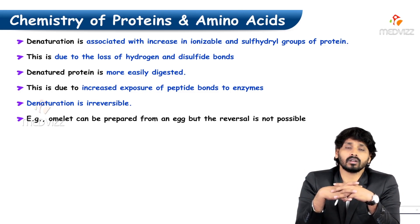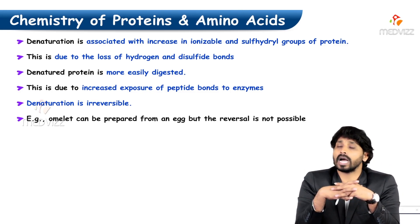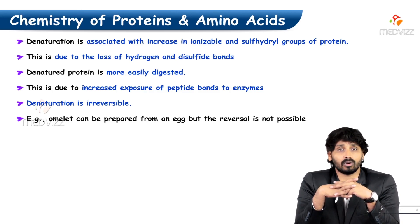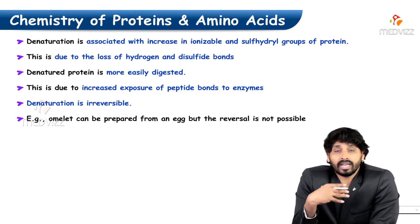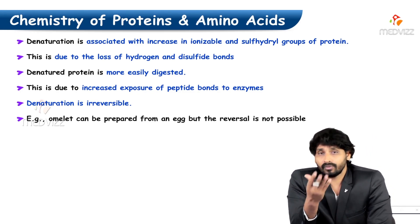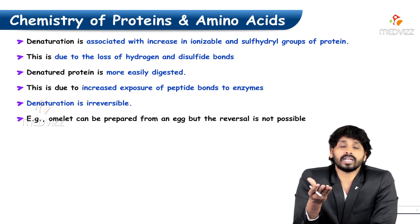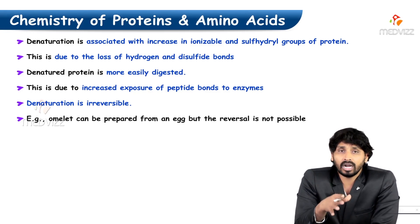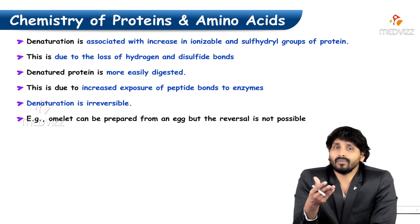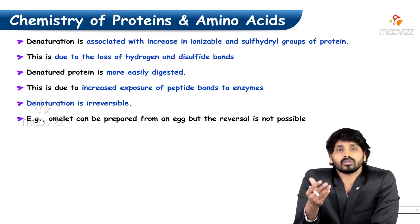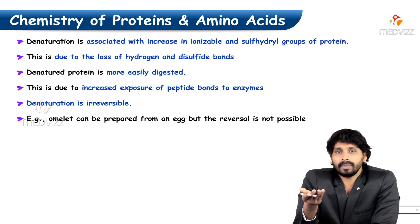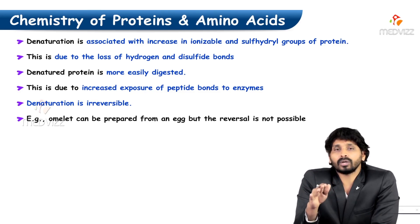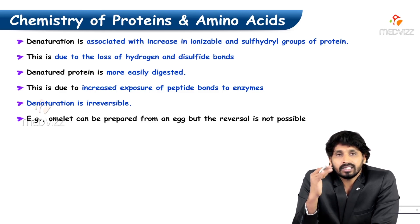This exposure happens because of loss of hydrogen bonds as well as disulfide bonds. Denatured protein is more easily digested. When consuming protein-rich food such as pulses, we soak and boil them before eating. Similarly, meat — a major source of protein — must be cooked; we cannot eat or digest raw meat properly, but once cooked it is easy to digest.